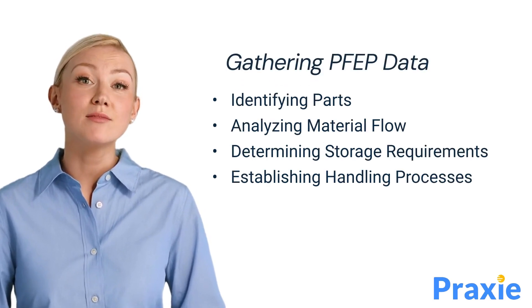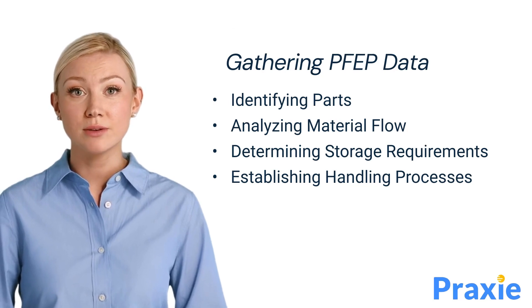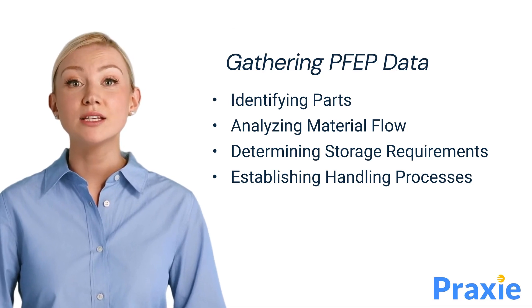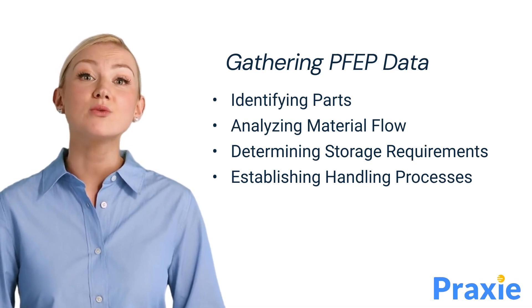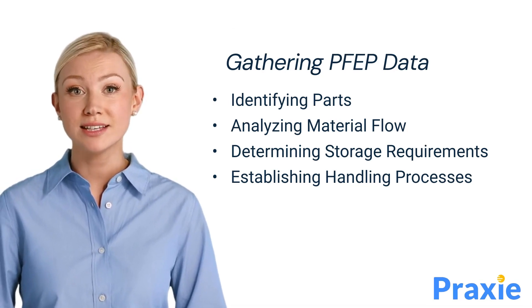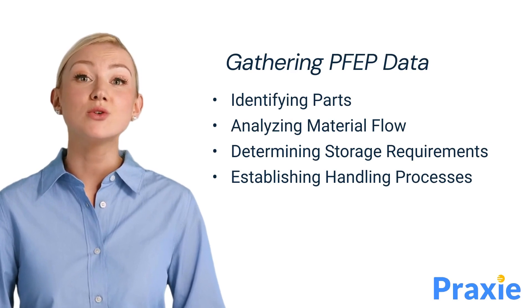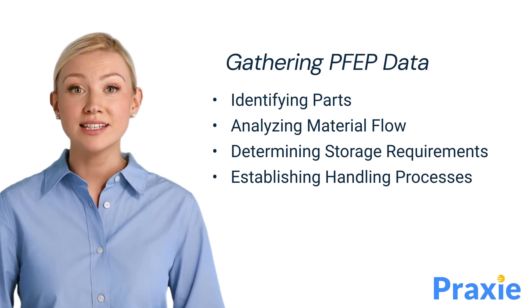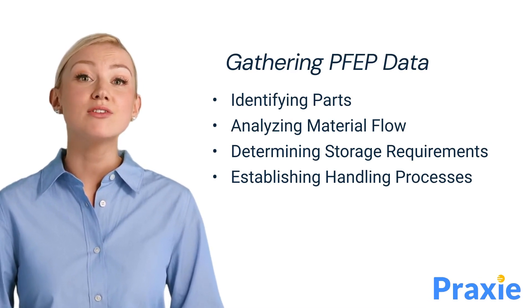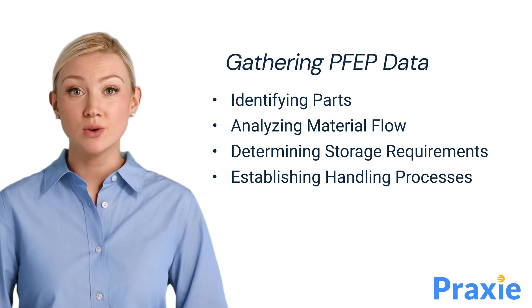To implement Plan for Every Part, start by identifying all parts in your inventory. Analyze material flow to determine how parts move through your facility. Then establish storage requirements and handling processes to ensure efficient part presentation and storage.